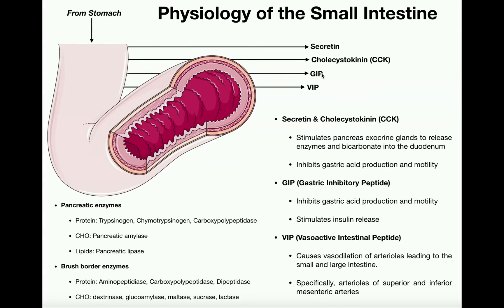The third hormone is GIP, or gastric inhibitory peptide. It overlaps with secretin and CCK in that it inhibits gastric acid production and motility — the stomach has already squirted its chyme into the small intestine, so it doesn't need to be active. But GIP also stimulates insulin release. Why? Because we're feeding — as absorption of amino acids and glucose into the blood occurs, we need to prepare by making insulin to prevent blood glucose from skyrocketing after absorption.